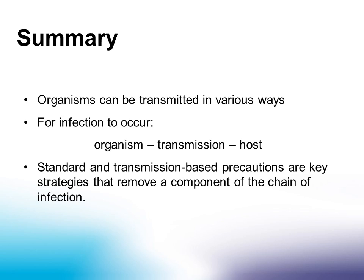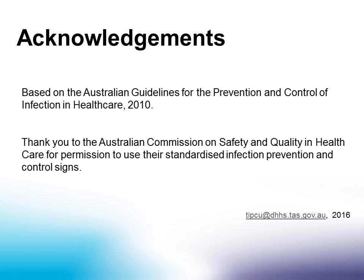Organisms can be transmitted in various ways. For infection to occur you need an organism, a mode of transmission, and a susceptible host. Standard and transmission-based precautions are key strategies that remove a component of the chain of infection. This session has been based on the Australian guidelines for the prevention and control of infection in healthcare. Thank you to the Australian Commission on Safety and Quality in Healthcare for permission to use their standardised infection prevention and control signs.